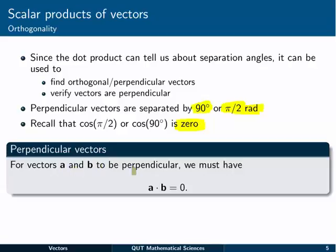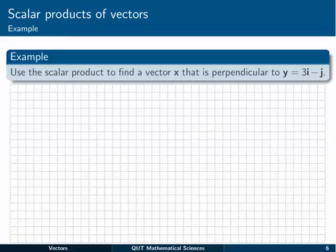So we have this result: for vectors a and b to be perpendicular, we must have that their dot product or scalar product is equal to 0. And that's another use for our dot product: verifying perpendicular vectors or finding a vector that's perpendicular.